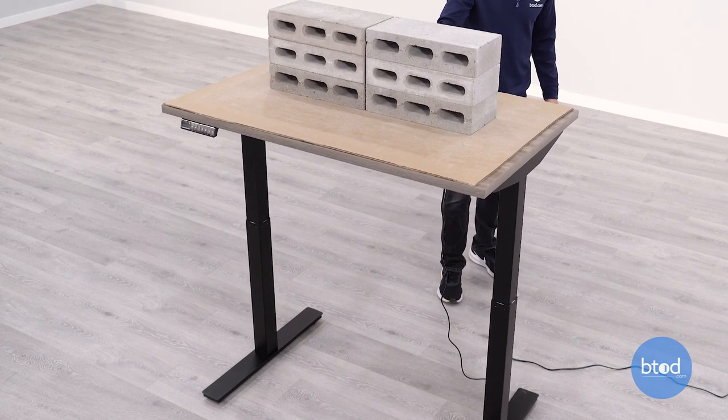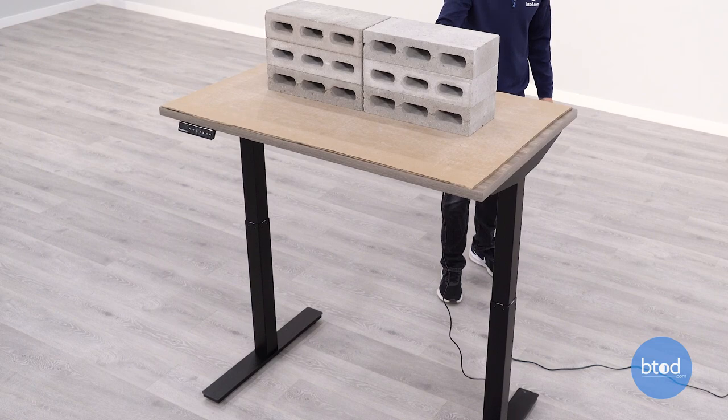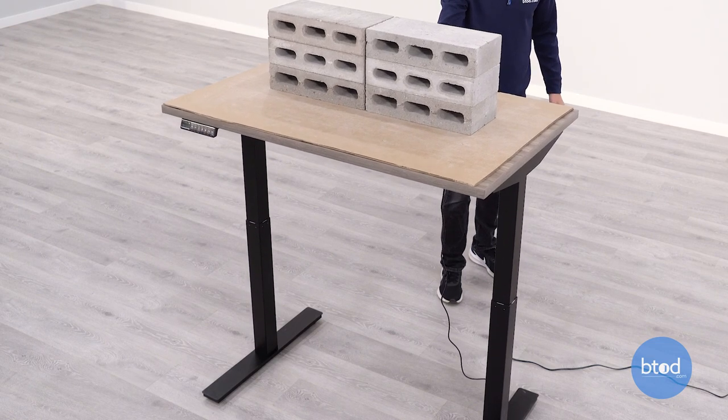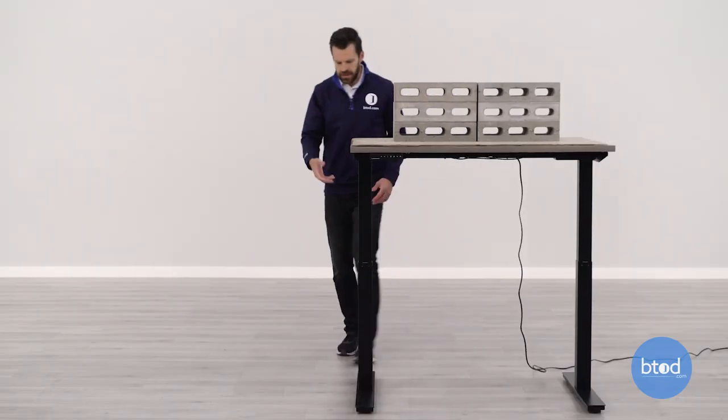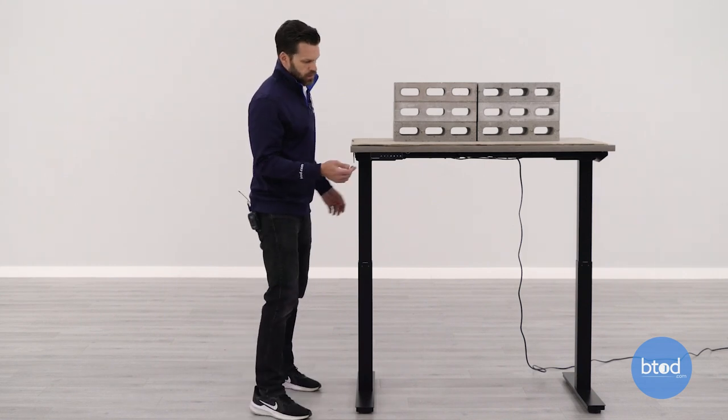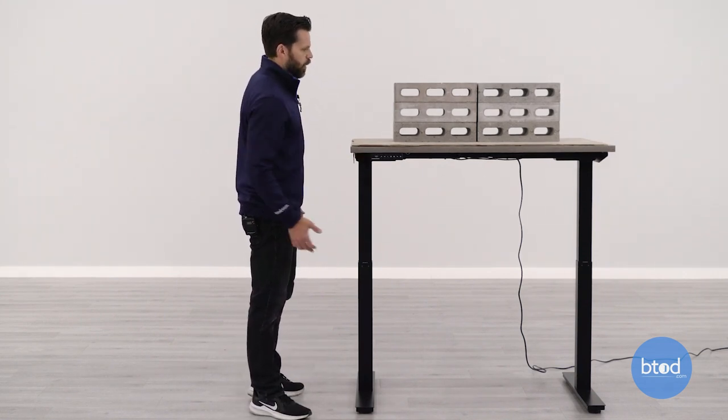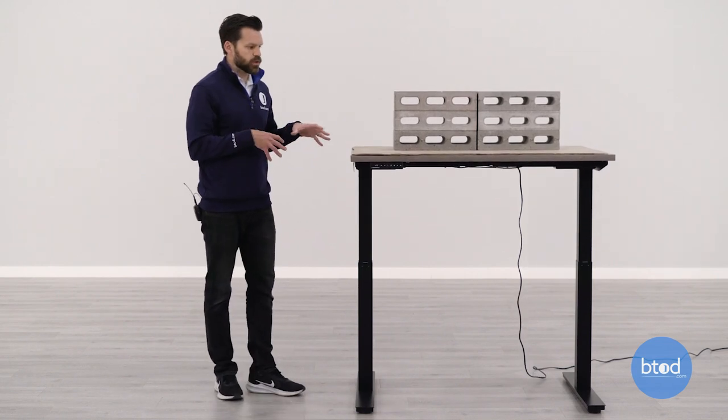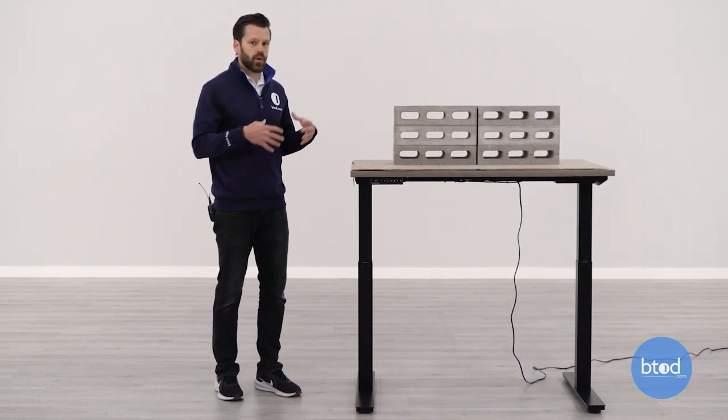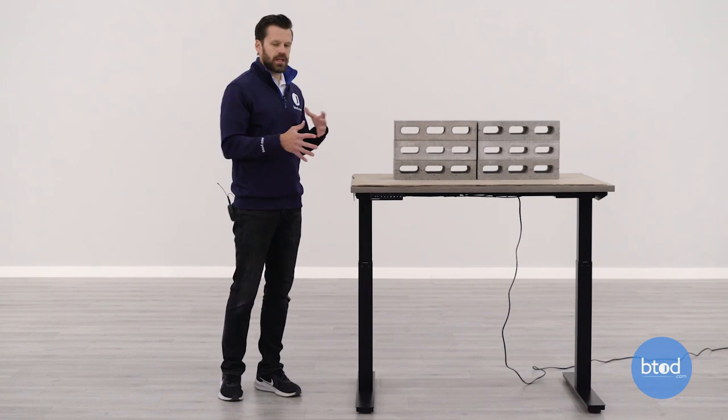So we do kind of expect that front to back rocking. You can see it's starting to pick the feet up off the floor. So with 200 pounds fully extended, that front to back rocking is probably the most noticeable of all the tests so far. So we're going to bring it back down. We'll go ahead and max this out. This desk maxes out at about 300 pounds. We'll go ahead and see how it performs for the final test.